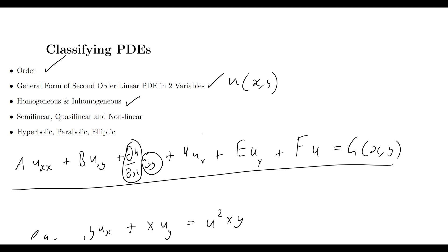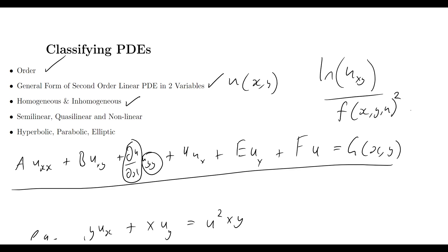For our final categorization, we have non-linear PDEs. The easy way to define non-linear is: it is not linear, not semi-linear, and not quasi-linear. For example, something like ln(u_xy) divided by some function f(x,y,u) squared plus other terms — that kind of monstrosity is simply non-linear. Non-linear is a very large area of PDEs but is a little more difficult to approach.